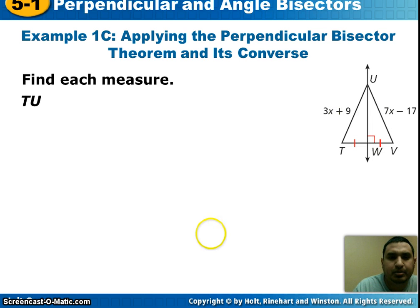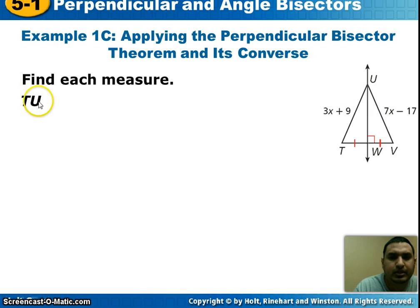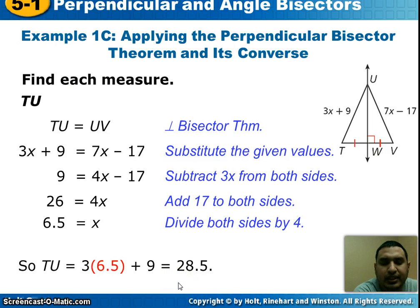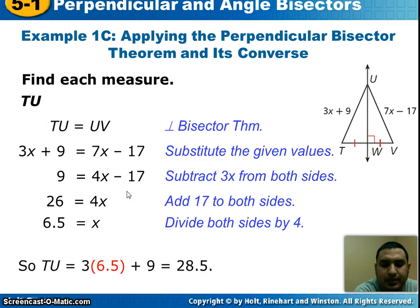Next example — I want you to work this one out on your own, so I'll give you a chance to draw this out. Pause the video and see if you can find the distance from T to U. The answer I got was 28.5 units. If you got that, great. If not, here are the steps so you can check yourself and see what you did wrong.